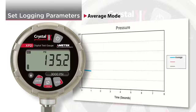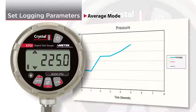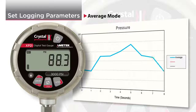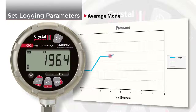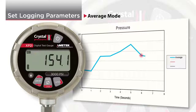Average mode works as follows. Data Logger XP will record data at the logging interval you've selected. The XP2i updates at 4 readings per second, so average mode will record the average of all the readings taken between logging intervals.